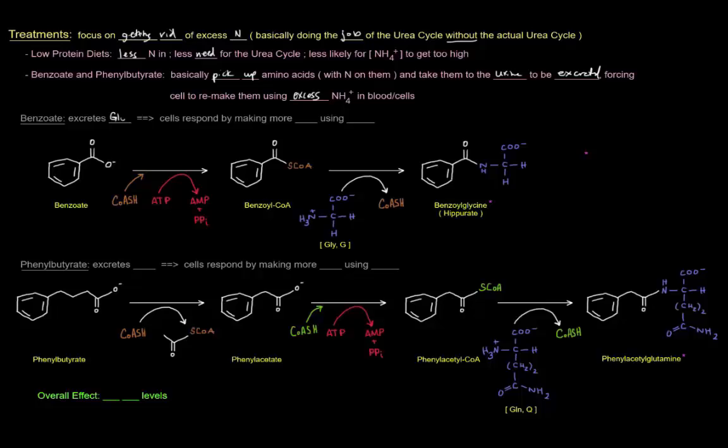So what does that mean? Well, let's take what I've drawn here and figure it out. Benzoate specifically excretes glycine, and so cells respond by making more glycine using ammonium ion that's freely floating. So what's going on with benzoate? Well, this is benzoate here. It's going to get converted to benzoyl-CoA by adding coenzyme A and some ATP. And the benzoyl-CoA's CoA here is going to be replaced by glycine, and we get benzoylglycine or hippurate. And what's important about this molecule is that it can be safely excreted in the urine.